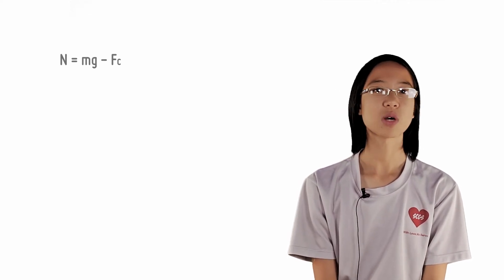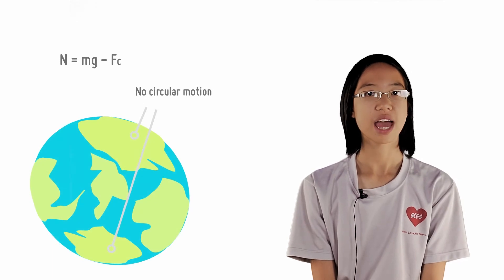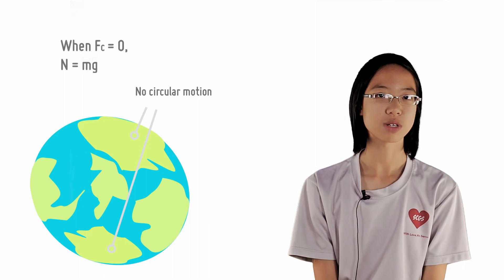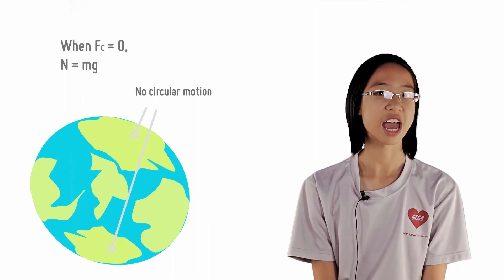At the poles, since you are not undergoing circular motion, fc equals zero, hence n equals mg. Thus, all you need to do is to move closer to the equator, and you're done.